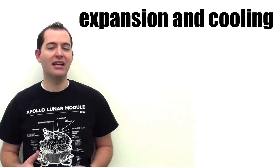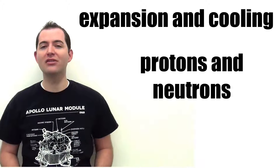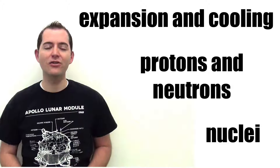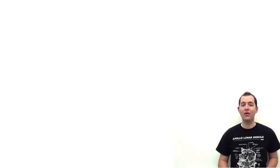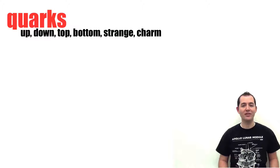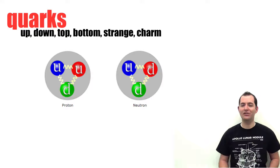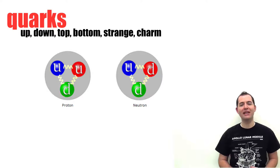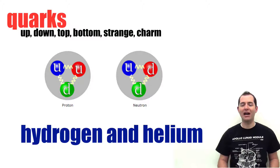As the universe continued to expand and to cool, the first protons, neutrons, and nuclei began to form. First, the quarks — one of the fundamental particles in our universe — began to combine to make protons and neutrons. Then the protons and neutrons began to combine to make hydrogen and helium ions or nuclei.